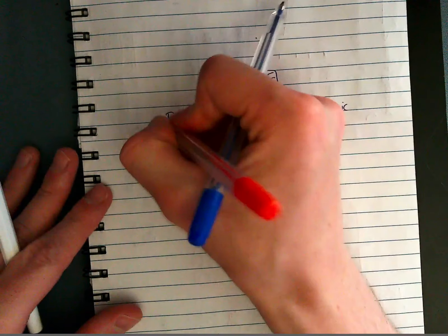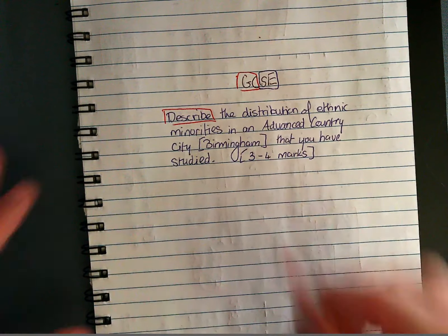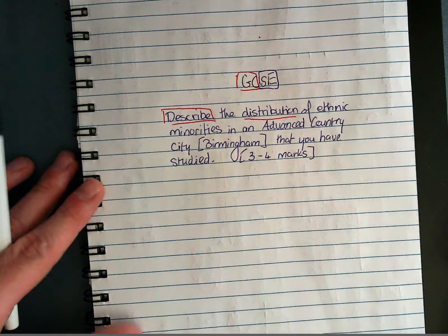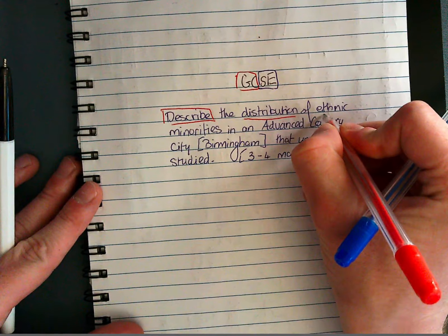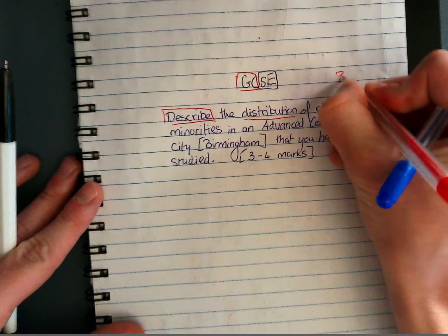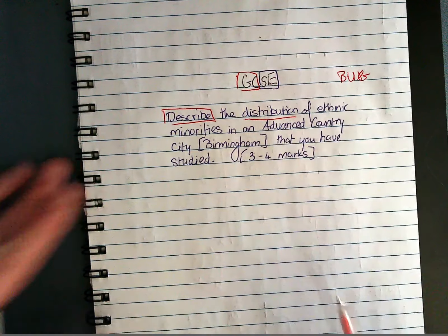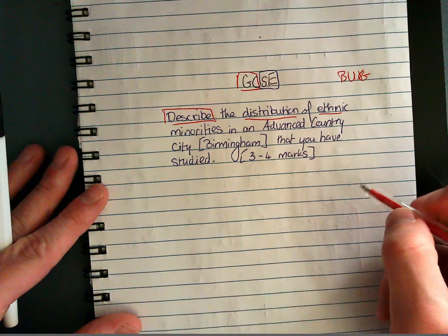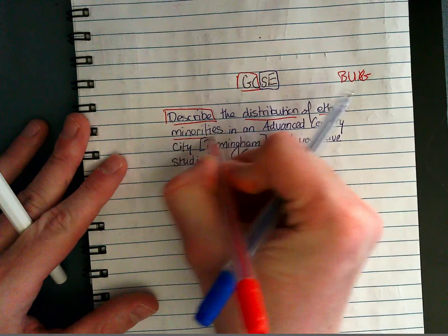We're going to bug our question. Describe, we are not required to explain anything in this question which is good because we don't need to dip into our knowledge bank of Birmingham. We have everything we need in front of us on that map. The distribution is what we're going to underline while we use our bug strategy: box for boxing the command word, U for underline, underline your keywords.